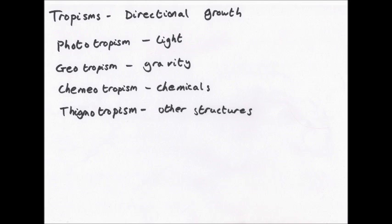Phototropism is important because things need to grow towards light for photosynthesis. Geotropism particularly happens in the roots — it anchors them in the soil and helps them take up water, which is needed to support the cells and for photosynthesis. Chemiotropism is important for flowers — the pollen tube grows down the style, attracted by chemicals towards the ovary where fertilisation can take place. Thigmotropism provides structure and support.